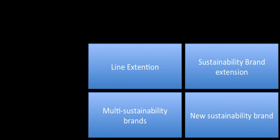Line extension occurs when a company adds new products of the same product category under the same sustainability brand name. Sustainability brand extension occurs when a company introduces products of a different product category but under the same sustainability brand name. Multi sustainability brands occur when a company creates an entire new brand name when they access a new product category, for example, Mud Jeans.